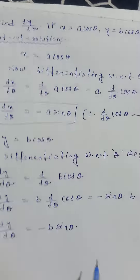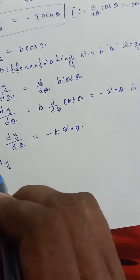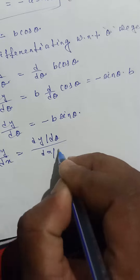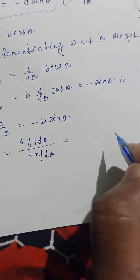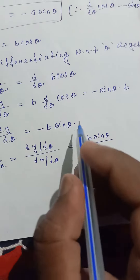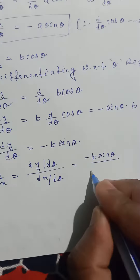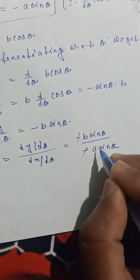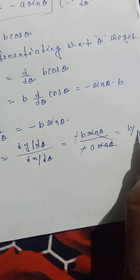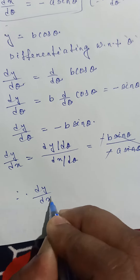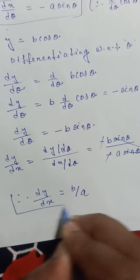Now we have to find dy by dx. dy by dx equals dy by d theta divided by dx by d theta. Substituting: dy by d theta is minus b sin theta, and dx by d theta is minus a sin theta. The negatives cancel and sin theta cancels, so dy by dx equals b by a.